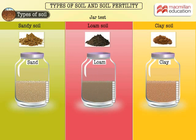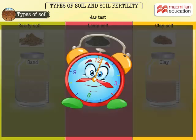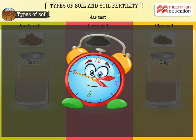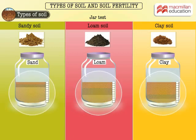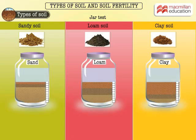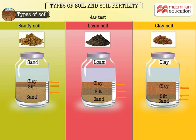We leave the jars aside for about 24 hours for the soil particles to settle down. We observe that there are different soil layers formed in each bottle. The bottom-most layer is sand, the middle layer is silt, and the top layer is clay.